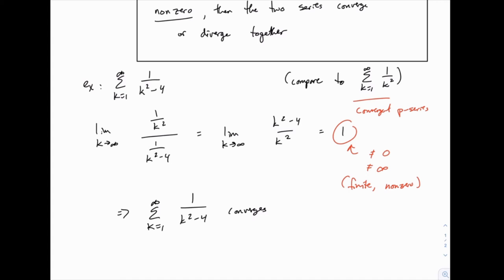If we had divided in the other order, it still would have worked — we would have had k²/(k²-4), which we could still solve using the principle of leading coefficients, but the algebra wouldn't have worked out quite as easily. You may find yourself in a situation where dividing in one order is easier algebraically than the other, so just use the easier one. If you start one way and find you need to reverse the order, that's totally fine. Just pick whichever is easier algebraically.